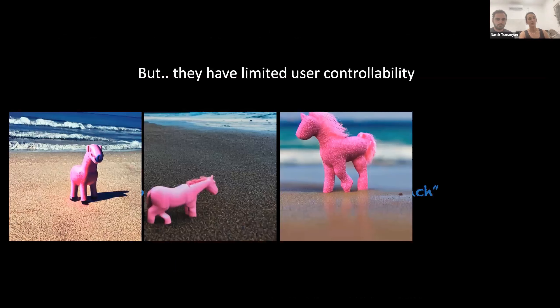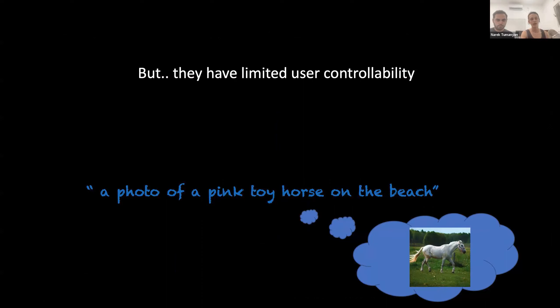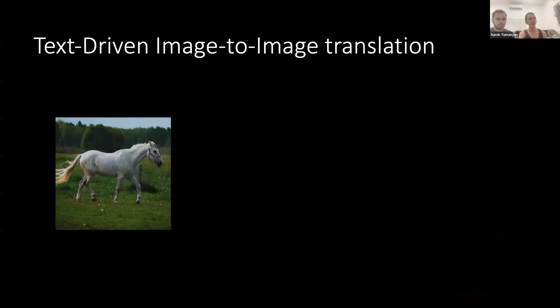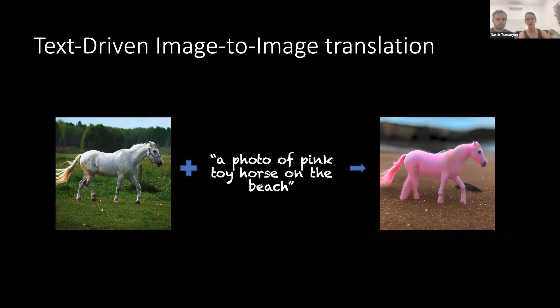So let's say we start with a prompt: a photo of a pink toy horse on the beach. We may get multiple layouts where the object is in different scales and locations in the image, and it might be the case that none of these options is actually what the user had in mind. A possible solution would be to provide a guidance image for the desired layout in addition to the text input. We phrase this as solving the task of image-to-image translation, where given an input image and a target text, we want to get an image that satisfies both the prompt and retains the layout of the guidance image.